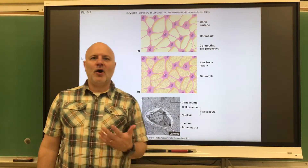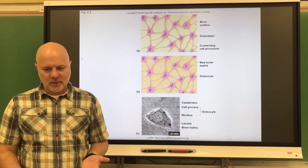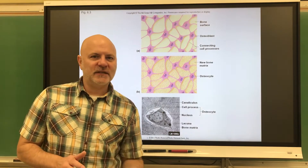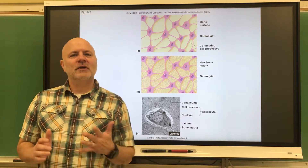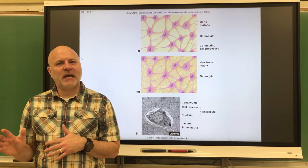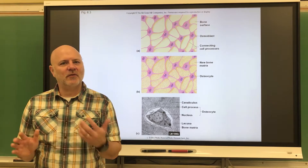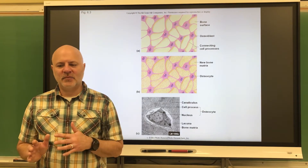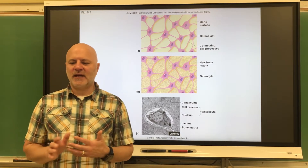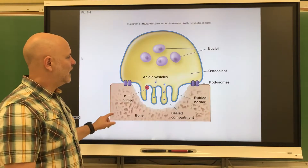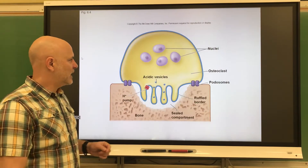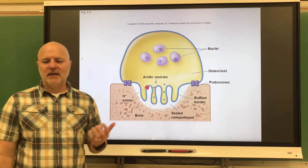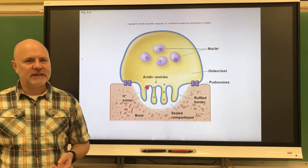Let's take a look at the homeostasis of bone tissue. The two cells I mentioned back in chapter four — I'll re-mention here again. One are osteoblasts, which are cells that produce new bone, and then osteoclasts, which are cells that break down bone.